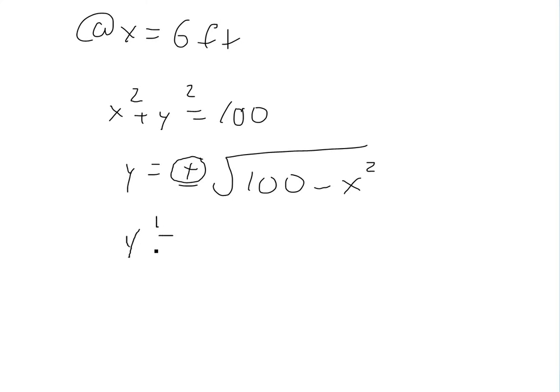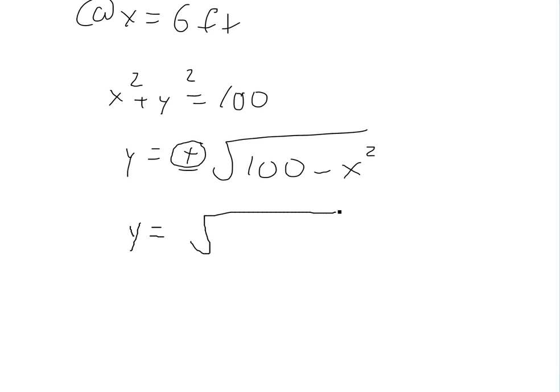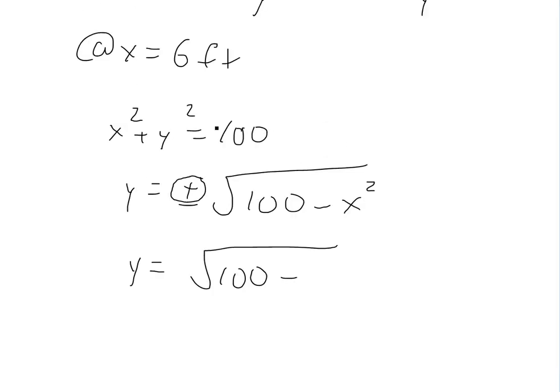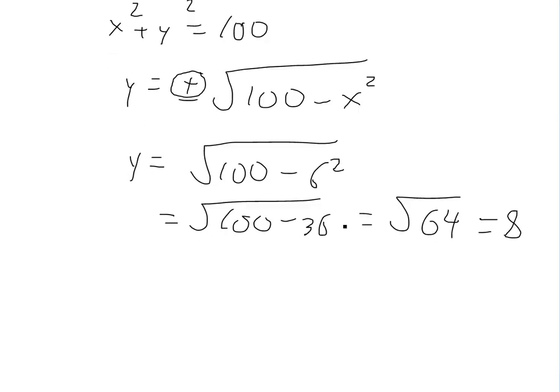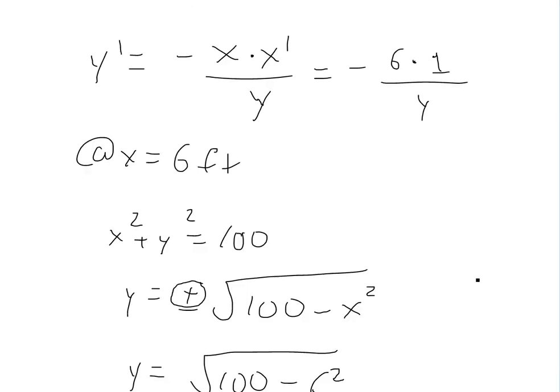So y is equal to square root 100 minus x squared. x is 6, so 6 squared. And 6 squared is 36. So we get square root 100 minus 36, that equals square root 64. And the square root of 64 is 8. So we have y is 8 right here.